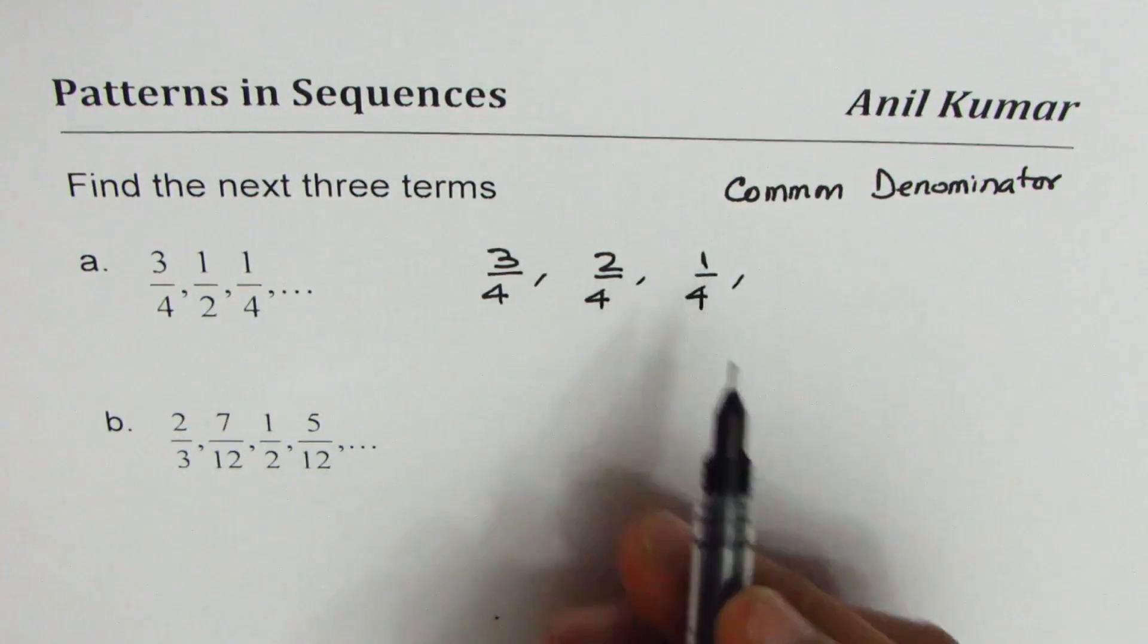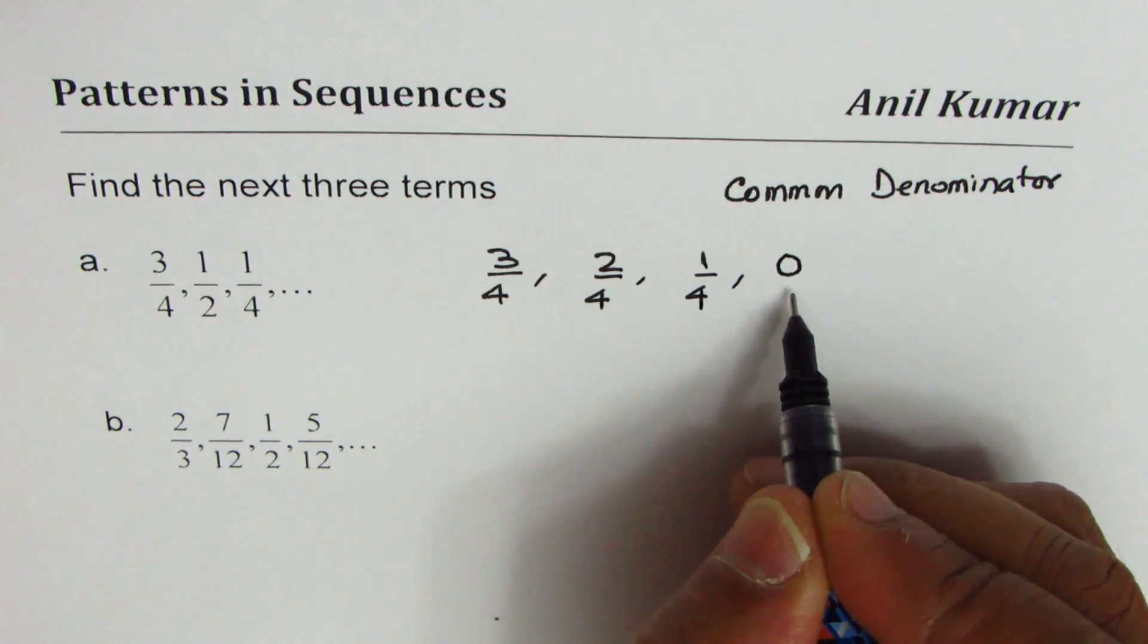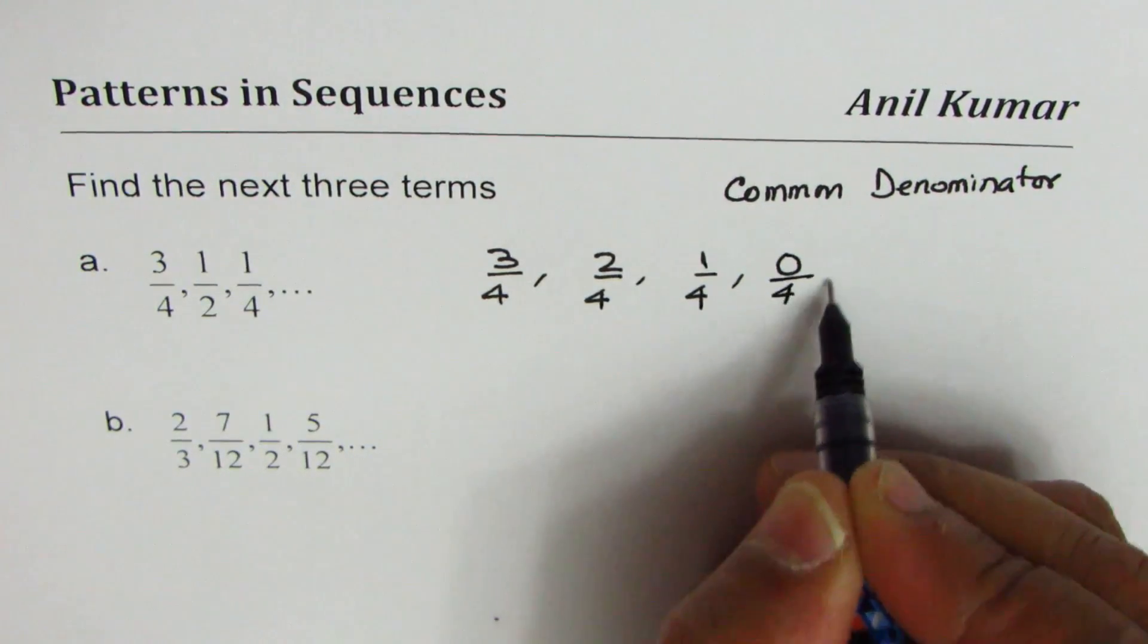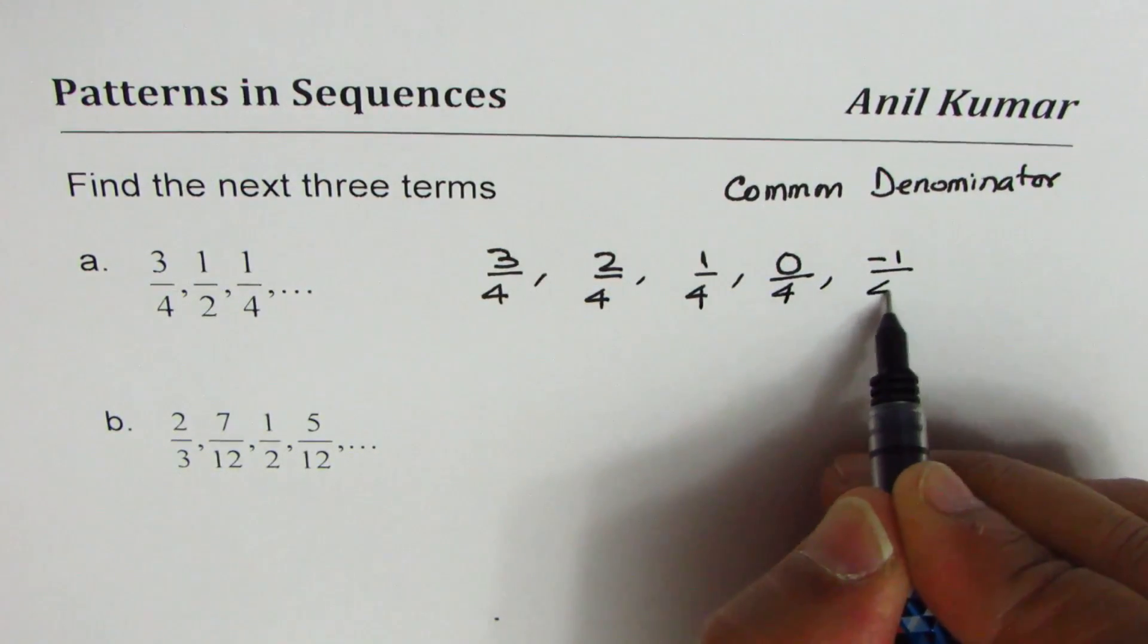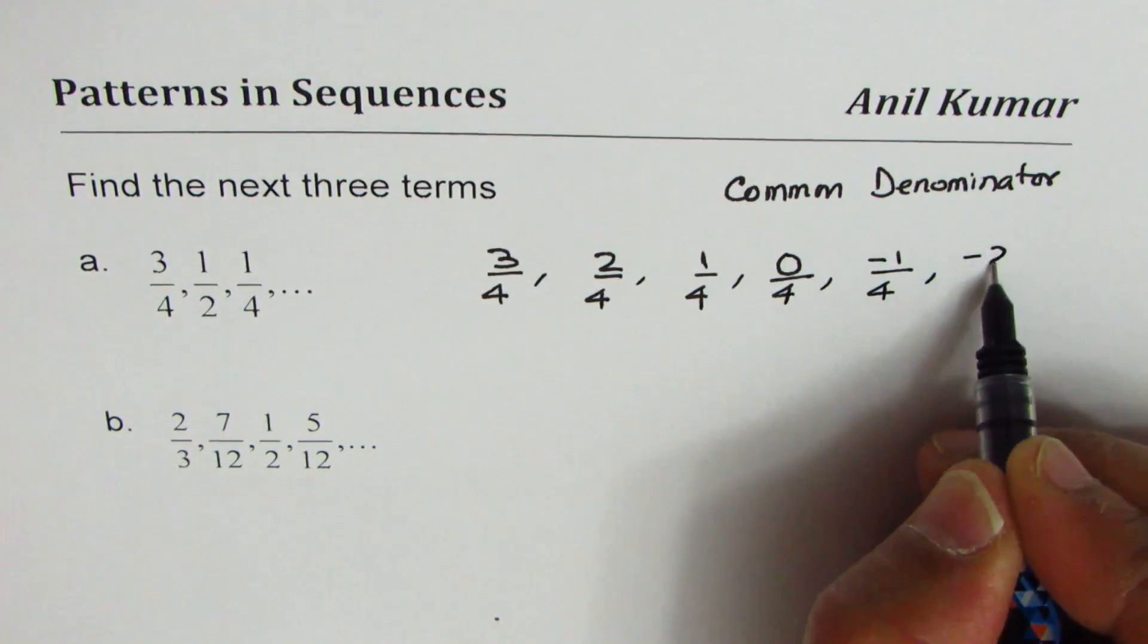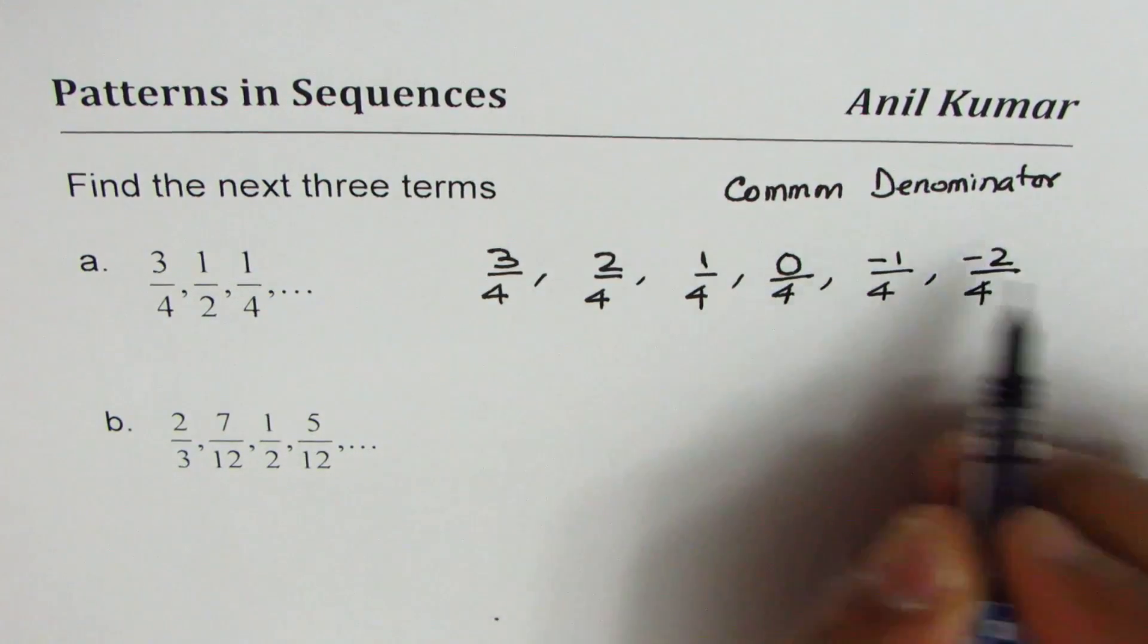Now it's easy to see the pattern. You see that 3, 2, 1, and of course this is 0, 0/4. Let me write 0/4. Next will be -1/4, and then -2/4.